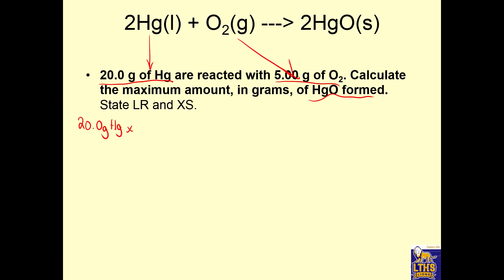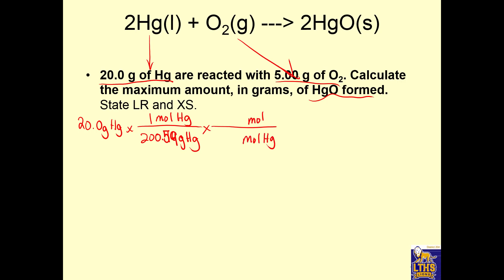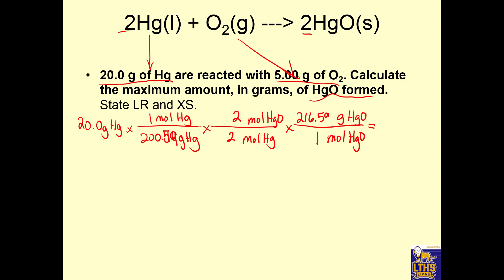We have 20 grams of mercury. The molar mass is 200.59 grams per mole of mercury. That tells us how many moles we have. In order to figure out how much product we can get, we have to change those moles into moles of HgO. Since the answer is needed in grams, we don't stop there. We use coefficients for moles to moles, and then one mole equals 216.5 grams from the periodic table. Canceling units, I get 21.60 grams of mercury oxide.